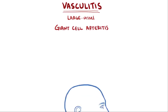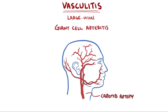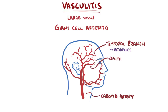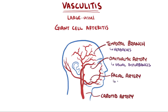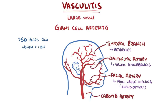Giant cell arteritis is a vasculitis that affects branches of the carotid arteries. Vasculitis in the temporal branch is the most common location and causes headaches. Vasculitis in the ophthalmic artery can cause visual disturbances, and vasculitis in arteries supplying jaw muscles can cause pain when chewing, called claudication. Giant cell arteritis affects older individuals, typically over 50 years old and more commonly women. Classically, it causes a really high erythrocyte sedimentation rate (ESR), sometimes over 100.